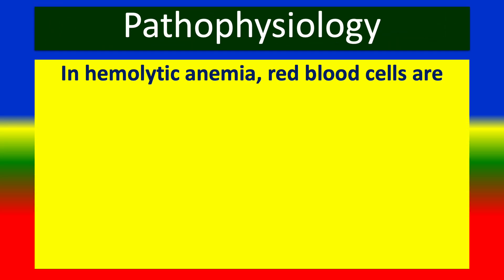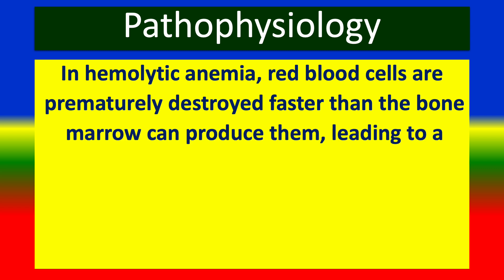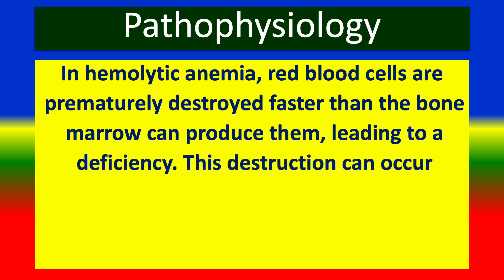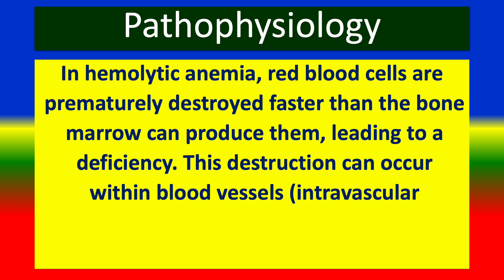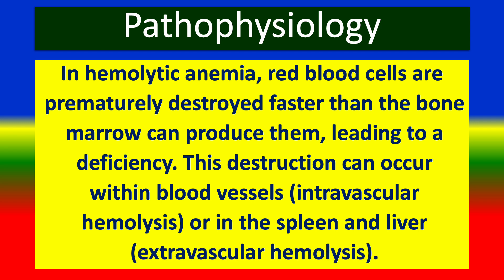Pathophysiology: In hemolytic anemia, red blood cells are prematurely destroyed faster than the bone marrow can produce them, leading to a deficiency. This destruction can occur within blood vessels — intravascular hemolysis — or in the spleen and liver — extravascular hemolysis.